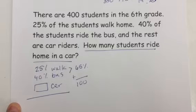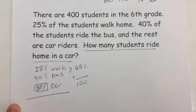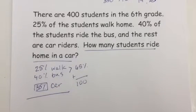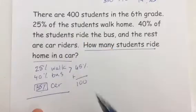100 minus 65, and I would get 35%. But it's not asking me what percent ride home in a car, it's asking me what number of students. So now I need to know 35% is what part of 400.